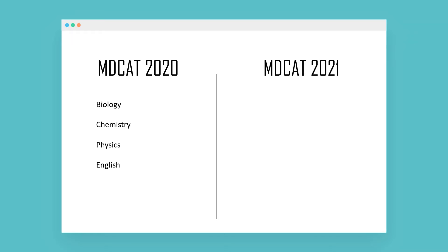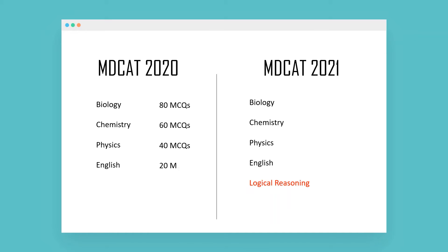In 2020 there were four sections: biochemistry, physics, and English. Now there are five sections, with logical reasoning being the new addition. The MCQ distribution has changed from 80 bio, 60 chem, 40 physics, and 20 English, to 68 bio, 56 chemistry, 56 physics, 20 English, and 10 logical reasoning. I'm not a huge fan of this, as medicine is intensely focused on biology and chemistry — reducing bio MCQs and increasing physics doesn't make much sense to me.